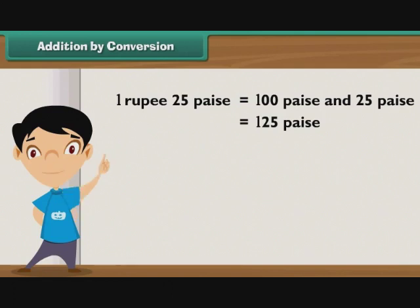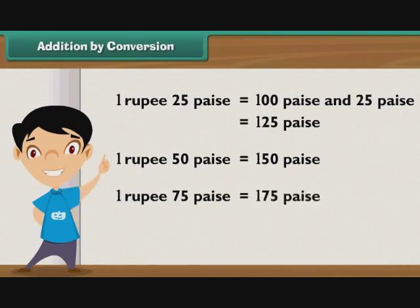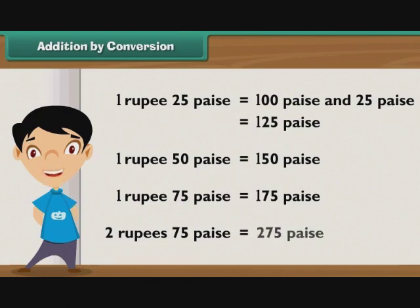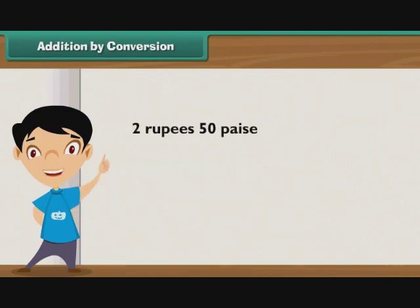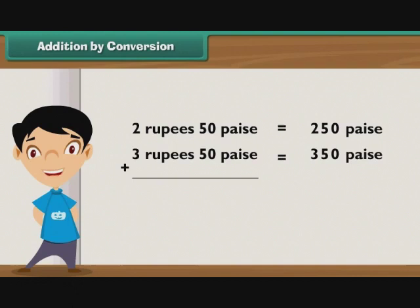By the same logic, one rupee 50 paise is equal to 150 paise. One rupee 75 paise may also be represented as 175 paise, and two rupees 75 paise is equal to 275 paise. Let us add 2 rupees 50 paise and 3 rupees 50 paise. 2 rupees 50 paise is equal to 250 paise, and 3 rupees 50 paise is equal to 350 paise.